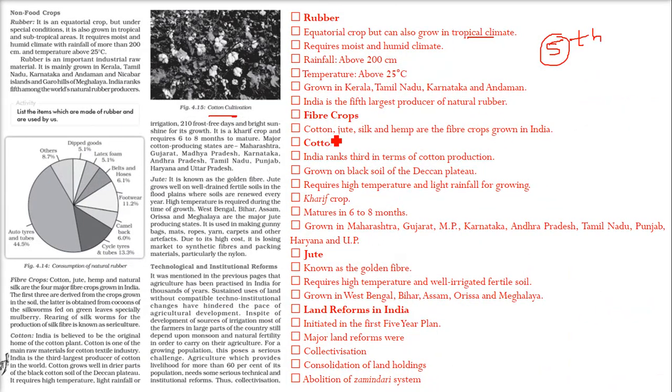Fiber crops include cotton, jute, silk, and hemp. Hemp is a canopy crop. These are the fiber crops grown in India.